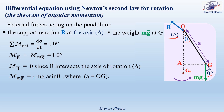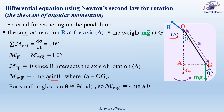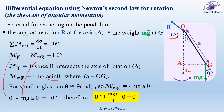A sin theta represents the perpendicular distance between the weight and the axis of rotation, where A equals OG. For small angles, sin theta is approximately equal to theta in radians. So the moment of the weight for small angles can be written as minus MgA theta. Replacing the moment of R by 0 and the moment of weight by minus MgA theta, we get: minus MgA theta equals I theta-double-prime. Dividing both sides by I, we obtain the differential equation: theta-double-prime plus (MgA over I) times theta equals 0.